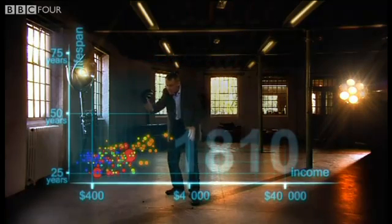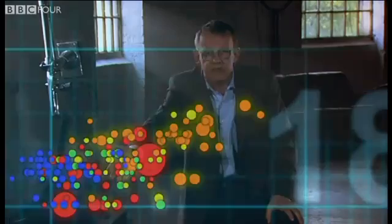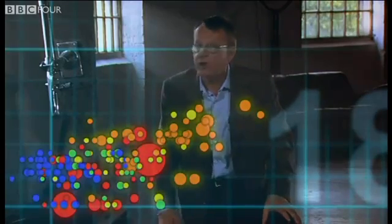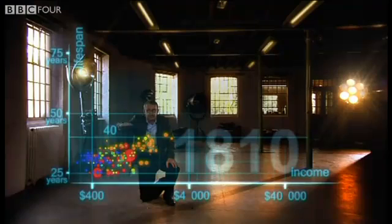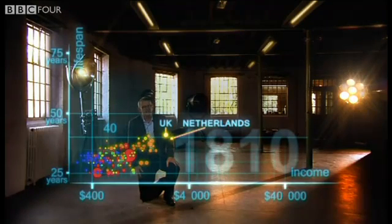And in 1810 it was pretty crowded down there — all countries were sick and poor. Life expectancy was below 40 in all countries, and only the UK and the Netherlands were slightly better off, but not much.